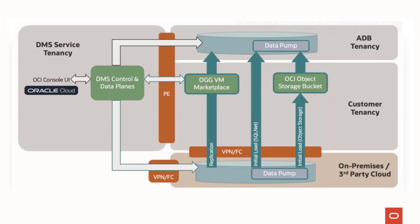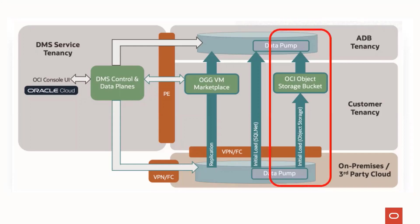There are three different options to move your data. We can use Oracle Golden Gate replication for an online migration. We can use database links for small databases. And lastly, we can create an object storage bucket to migrate our larger databases using Datapump. In this lab, we will be using Datapump to move the data.